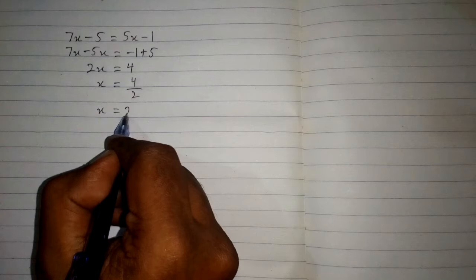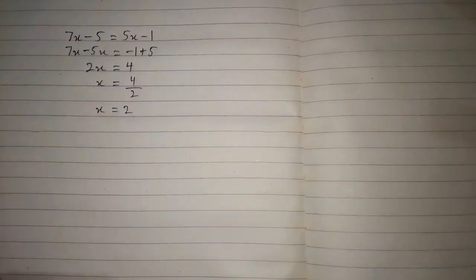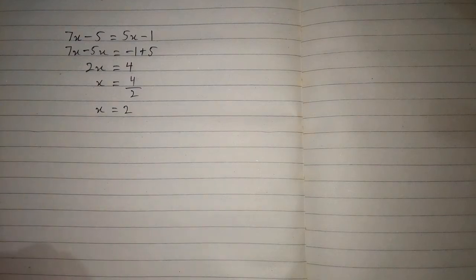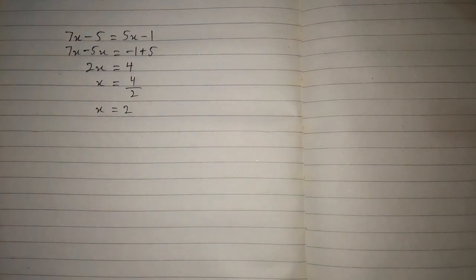And 4 upon 2 is 2, so x is equal to 2 is the solution of the given equation which is 7x minus 5 is equal to 5x minus 1.